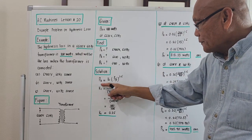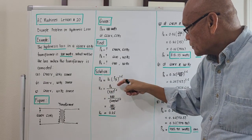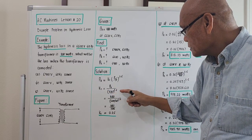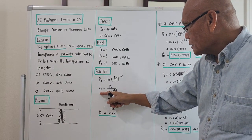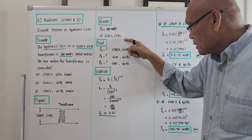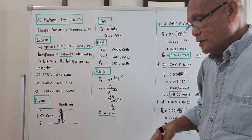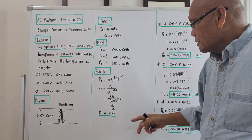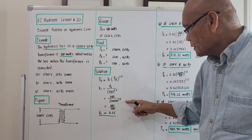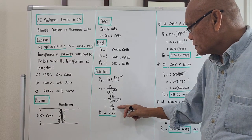From this equation, we'll compute for k1. k1 will be Ph divided by the quantity E over frequency, raised to 1.6 — meaning the ratio of voltage and frequency raised to 1.6. To solve for the constant of this transformer, k1, we'll use the initial condition: at 6600 volts and 60 Hz, the hysteresis loss is 480 watts. So k1 equals 480 divided by 6600 over 60 raised to 1.6. I calculated 6600 over 60 raised to 1.6 on the calculator — that gives approximately 1846.